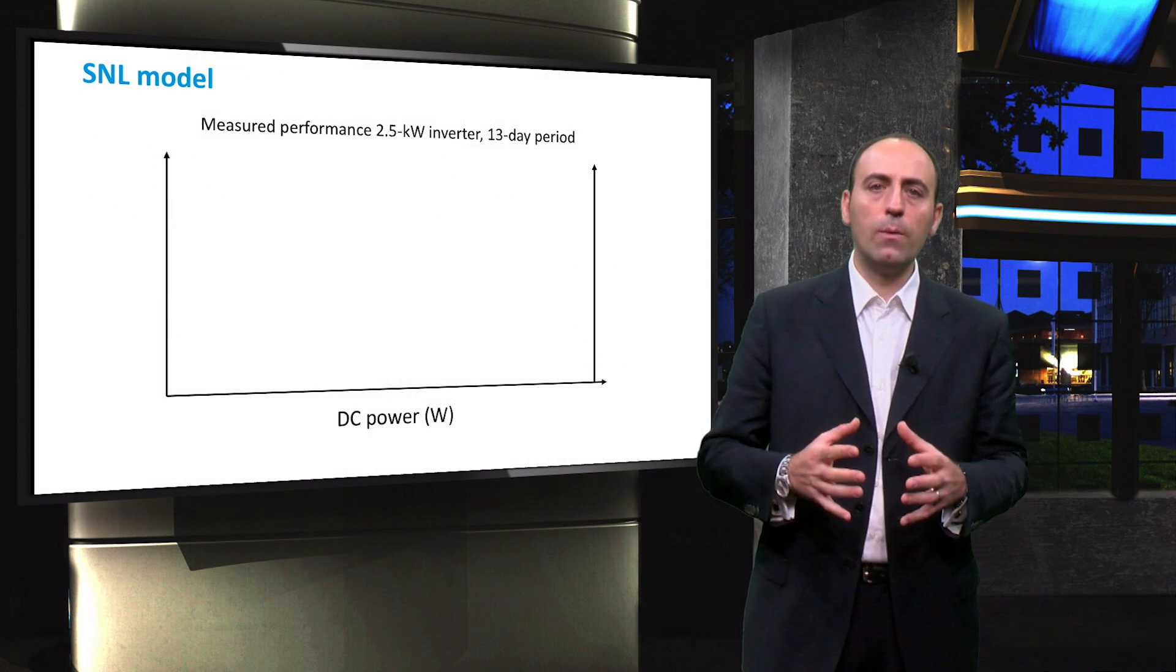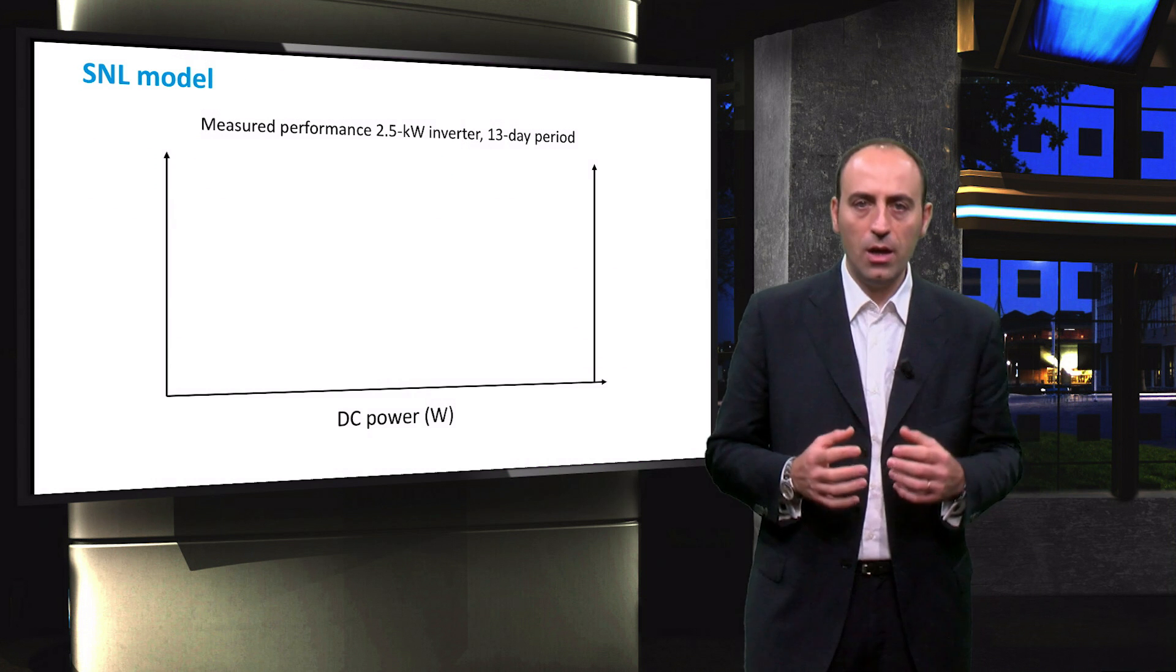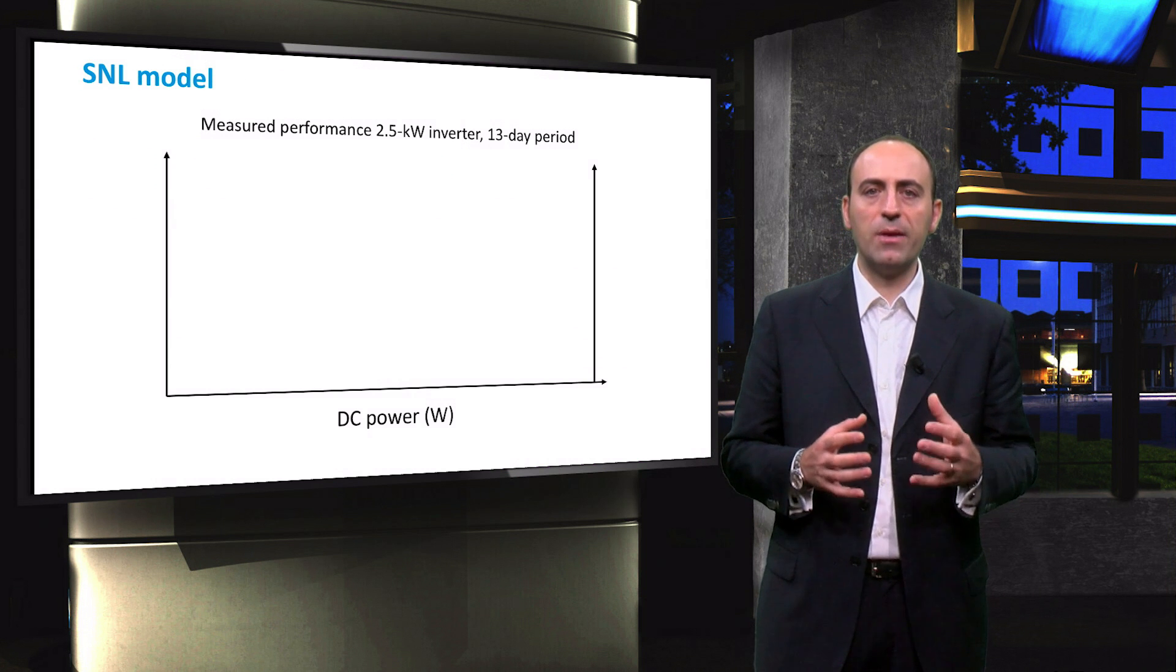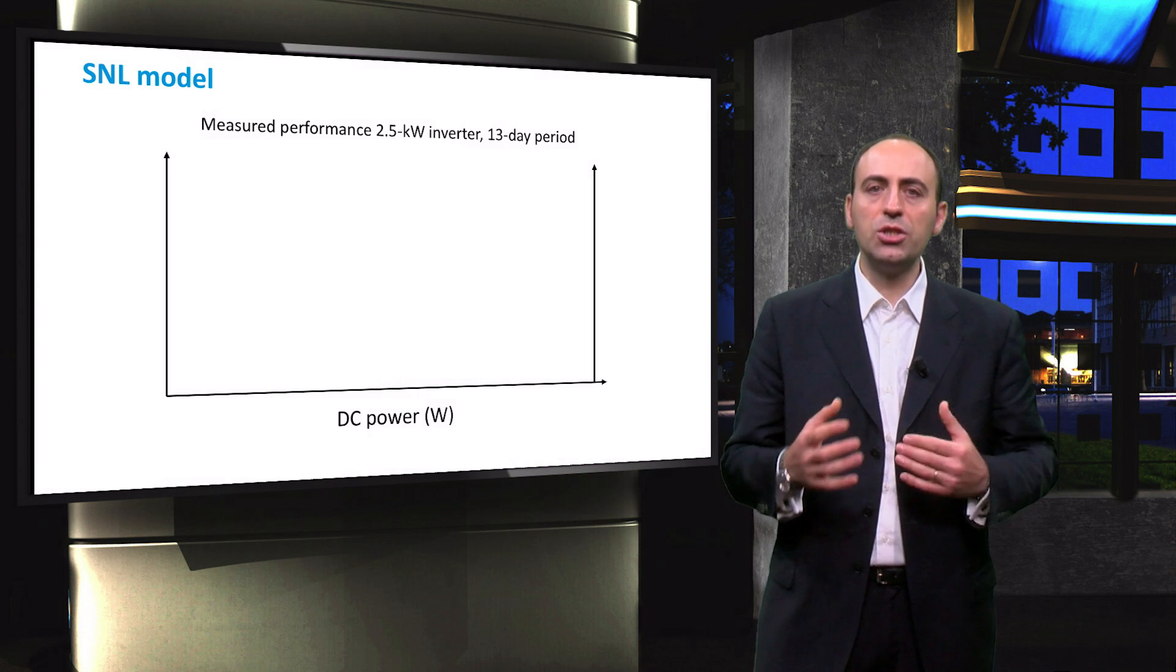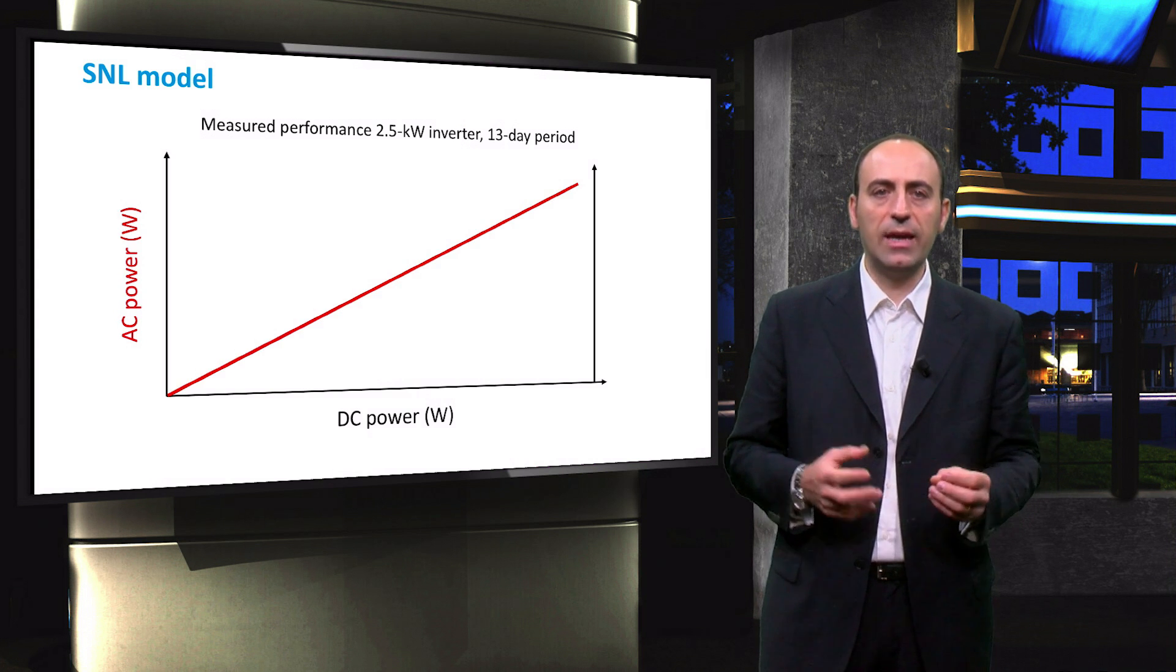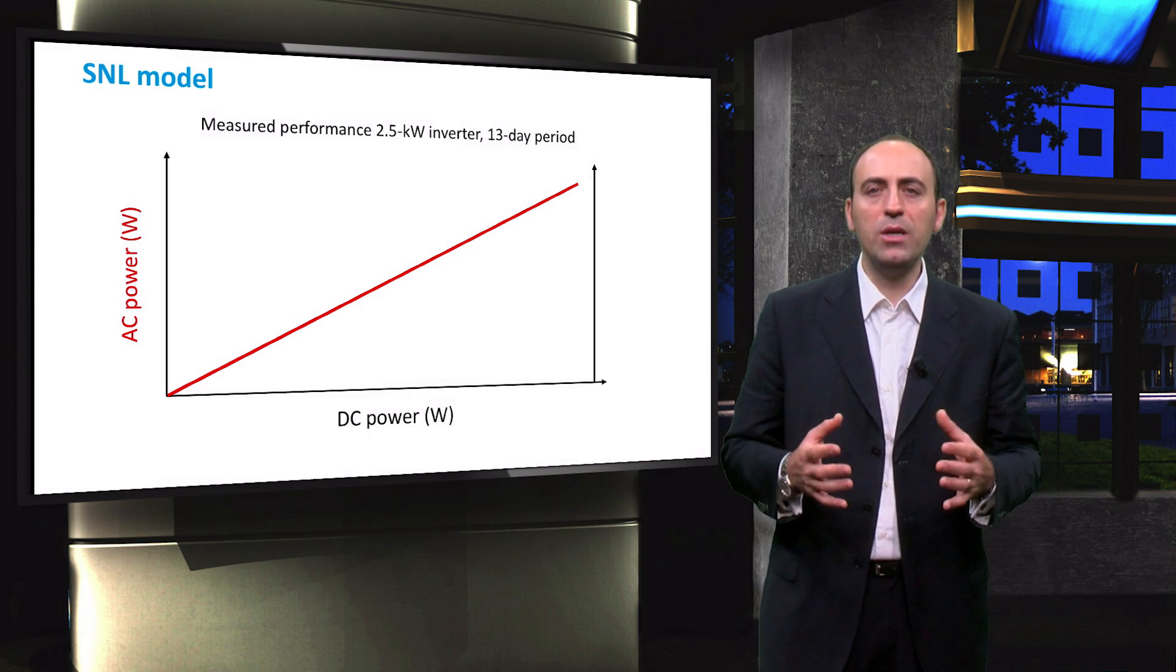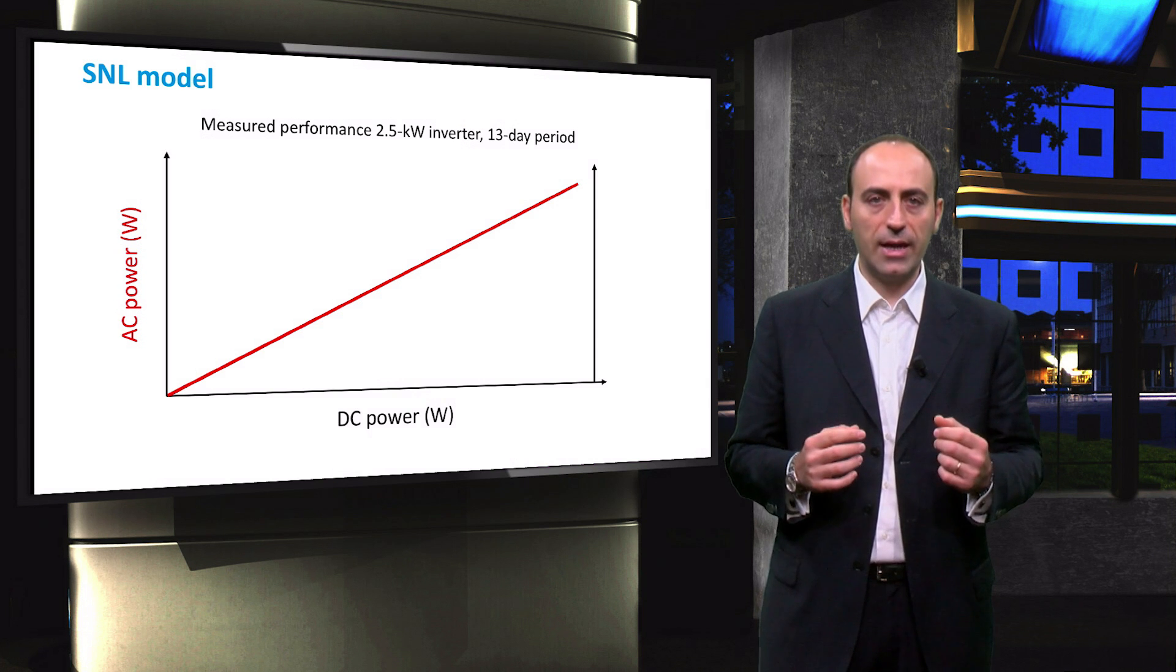To show an inverter efficiency curve, some experimental data need to be retrieved. In the following case, field test measurements were taken during a period of 13 days, with changing weather conditions. The relationship between the AC and the DC power appears to be almost linear, even though we will see that this is not entirely the case.